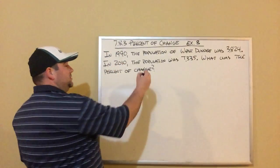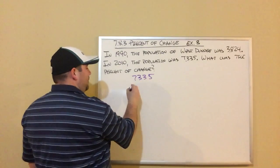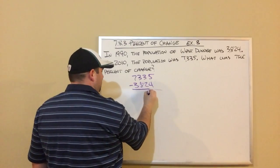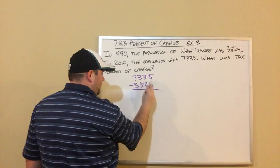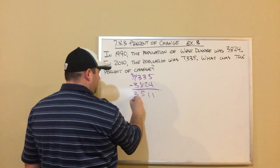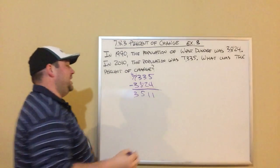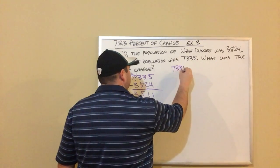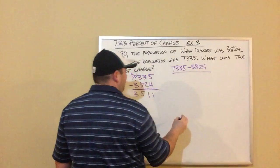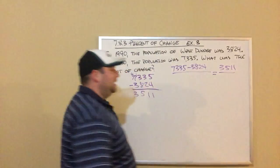So we're doing 7,335 minus 3,824. You can use a calculator, but I'll just do it by hand here — that gives us 3,511. So the amount of change is 3,511. We did 7,335 minus 3,824, and that was our amount of change.